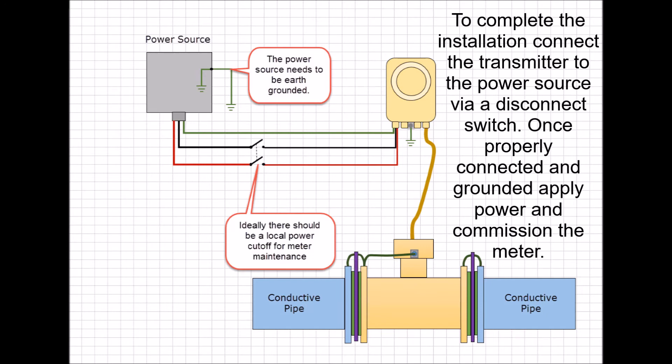The final step in the installation process would be to connect the transmitter to the power disconnect and apply power to the system. The meter should now be tested and checked for errors in the diagnostics menu then commission by executing the easy setup program.